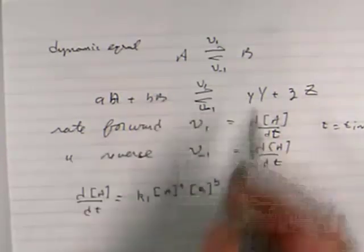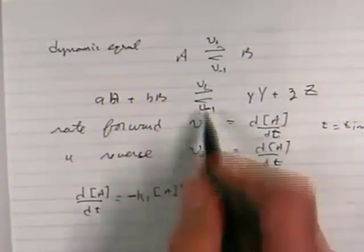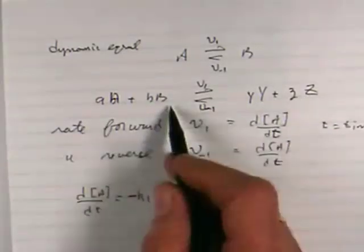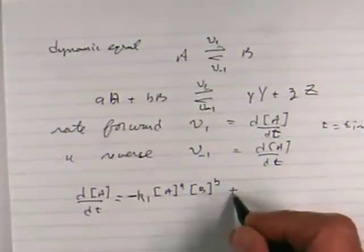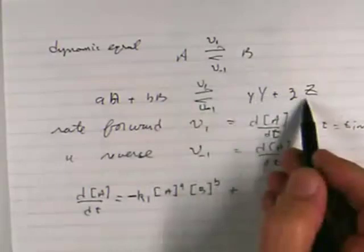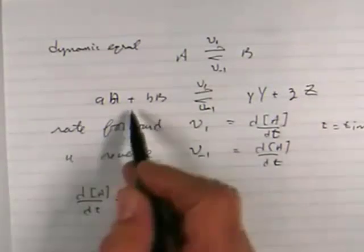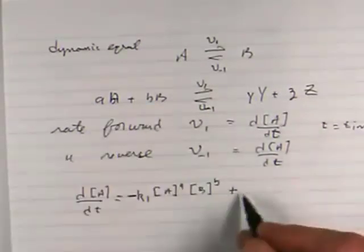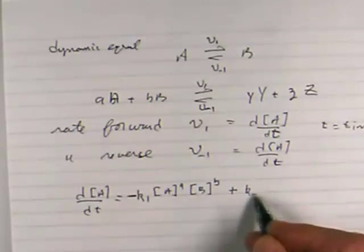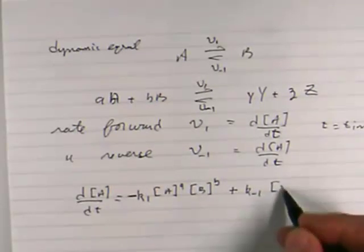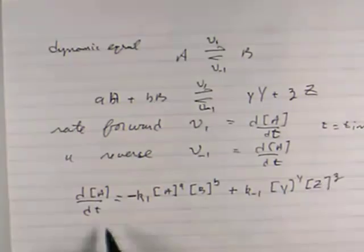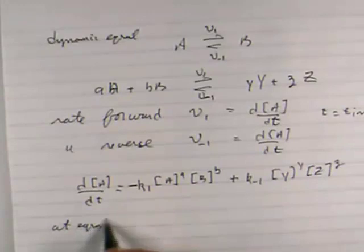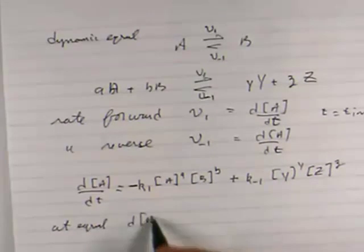So the forward reaction, I put a negative sign in there because in that direction you're losing A and B. But in the opposite direction, if you look at the reaction which goes from here to there, it increases A. So it's plus, and it's K minus 1, and in this case it depends upon the concentration of Y and the concentration of Z. And at equilibrium, dA by dt is equal to 0.